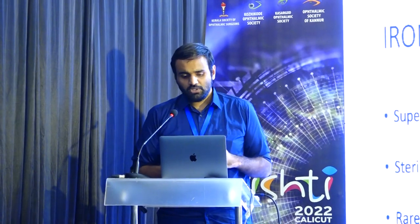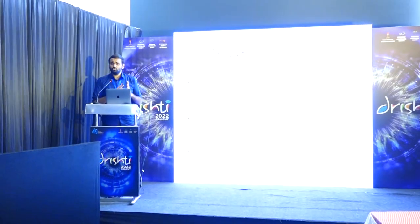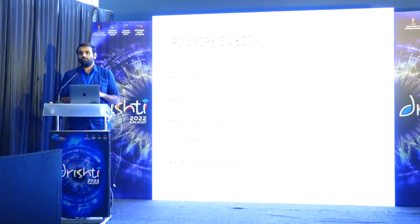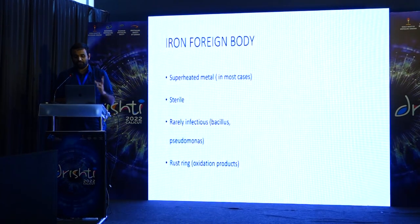Next, Dr. Sanjeev will talk about corneal foreign body and rust ring removal — something less glamorous that we all do every day. Iron foreign bodies are basically superheated metal — most likely sterile, although infection is most likely to be Bacillus or Pseudomonas, which are of the worst kind. The rust ring is the oxidation product around it.